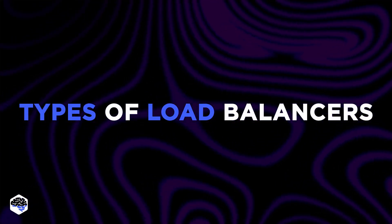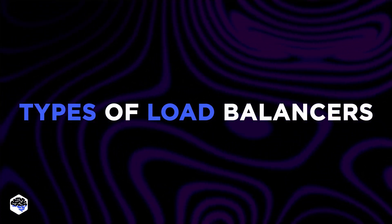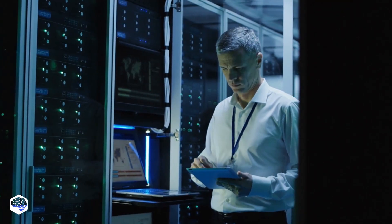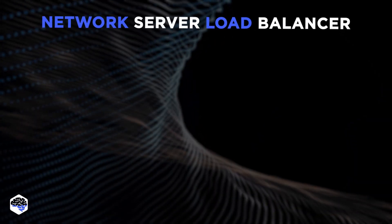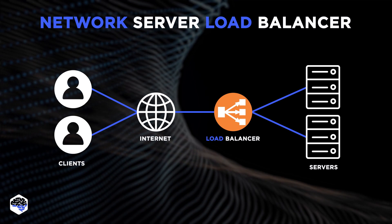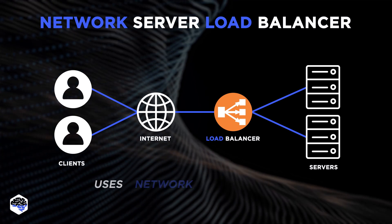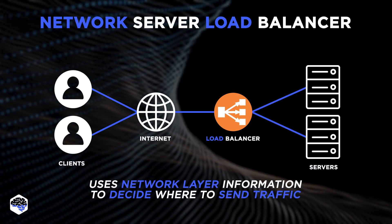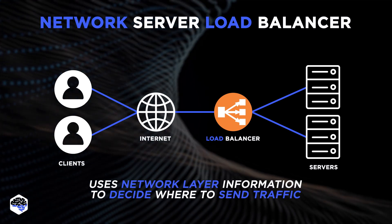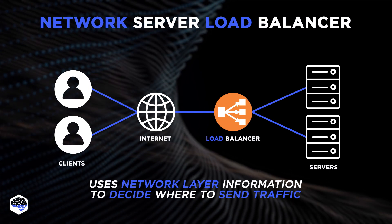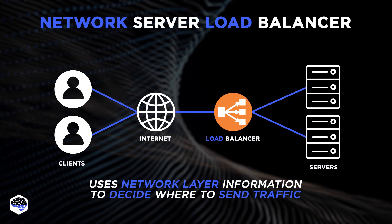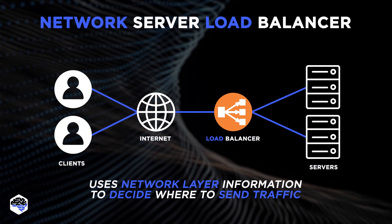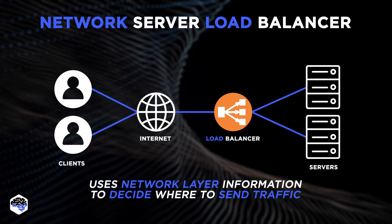What types of load balancers are out there? Load balancing can be done using both hardware and software tools. For example, the Network Server Load Balancer, L4, uses network layer information to decide where to send network traffic. It is considered the fastest of all, but it does not balance the distribution of traffic between servers.